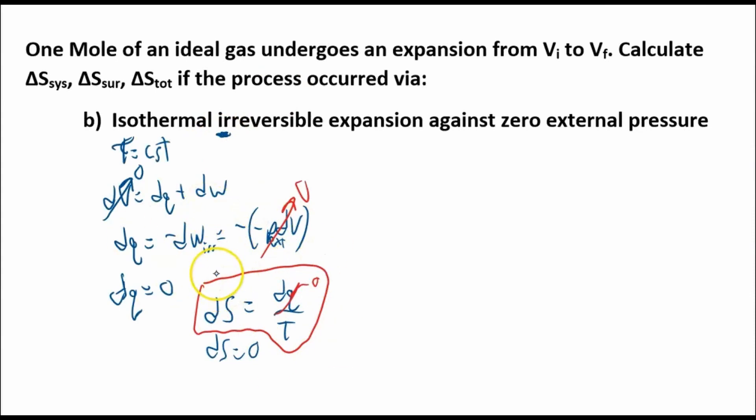We can't use this stuff. All we can say for an irreversible process is that dS is greater than dq over T for this irreversible path. For a reversible path, it's equal to zero. This is just saying for an irreversible path, it's got to be greater than zero. So that doesn't really help us. It could be any number greater than zero.